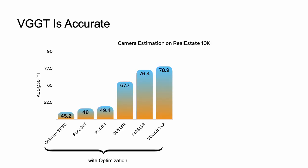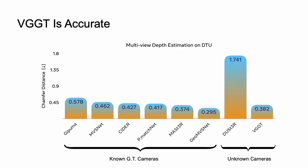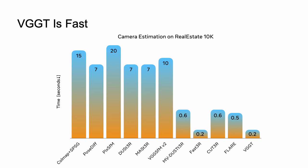Quantitatively, VGG-T is accurate. Previous optimization-based methods have achieved great results in camera pose estimation, and some concurrent deep works at CVPR 2025 also show good results. With VGG-Transformer, just by a feed-forward run, we have achieved much better results than all of these methods. VGG-Transformer is also fast — compared to optimization-based ones, we are around 50 times faster, such as 10 seconds versus 0.2 seconds. Compared to concurrent works at CVPR 2025, VGG-Transformer matches the fastest speed while maintaining a clear advantage in accuracy.